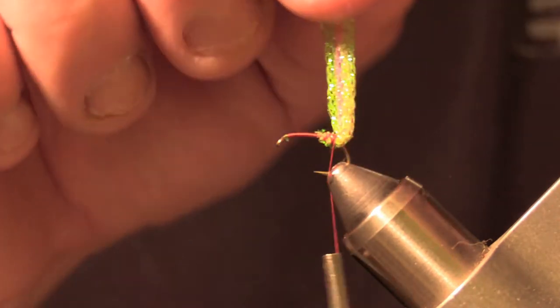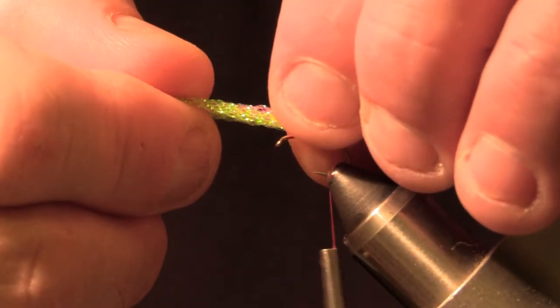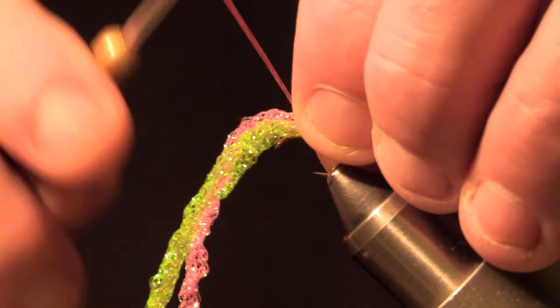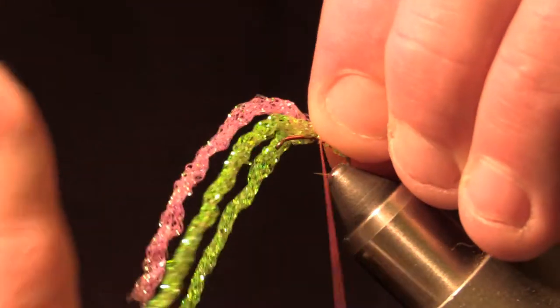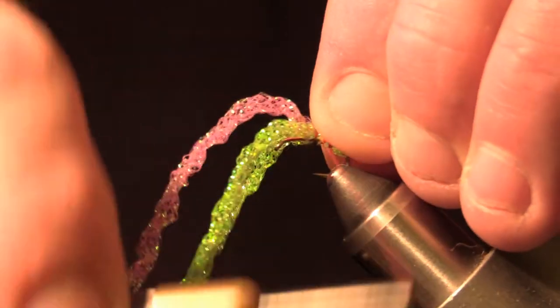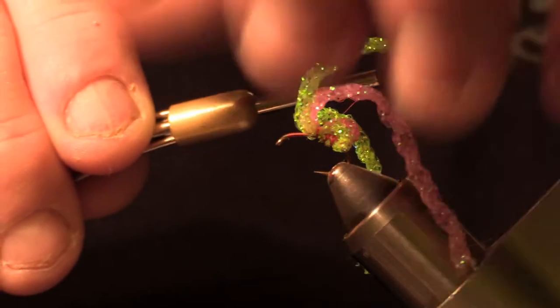Then you just pull it over to the front. Kind of pull it tight. Pinch it with your left hand and pull it back. Put three wraps back there and three wraps in the front of it.